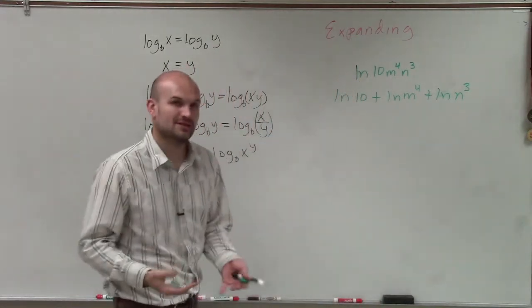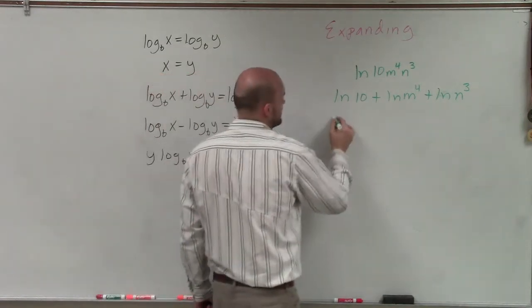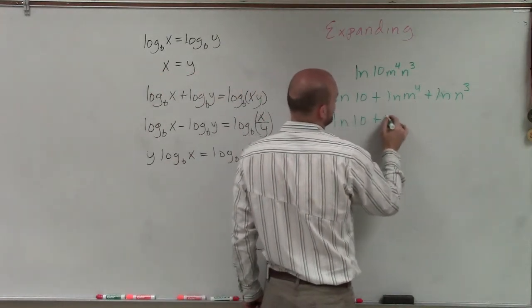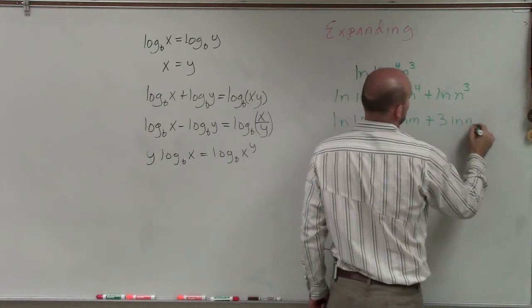Now, the last step we can do is, again, take our powers, and we can rewrite them in front of our logarithm. So therefore, it's going to be ln of 10 plus 4 ln of m plus 3 ln of n.